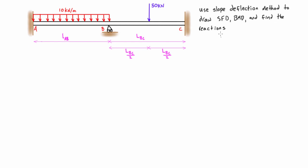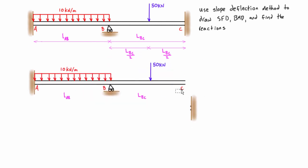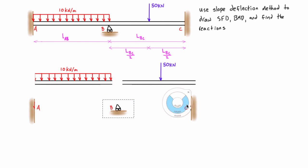This is going to be a pretty long problem, so it'll be split into a couple of videos. In this first video, let's set up the problem. The first thing we do with the slope deflection method is separate out the spans from their reactions, then label the end moments for each of these virtually separated spans.